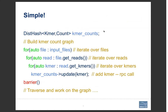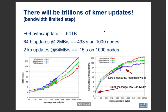At first blush, the code is pretty simple. We build the distributed hash table — actually a distributed object in UPC++. Then we iterate over all input files, over all reads within those files, and over all KMERs within those reads, doing an insert into the distributed hash table, which calls the RPC that does the actual insert. Once everything's loaded, we can traverse the graph and do the assembly work.